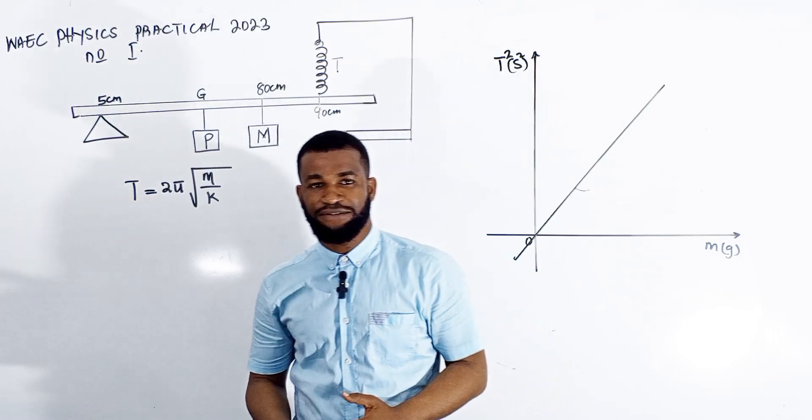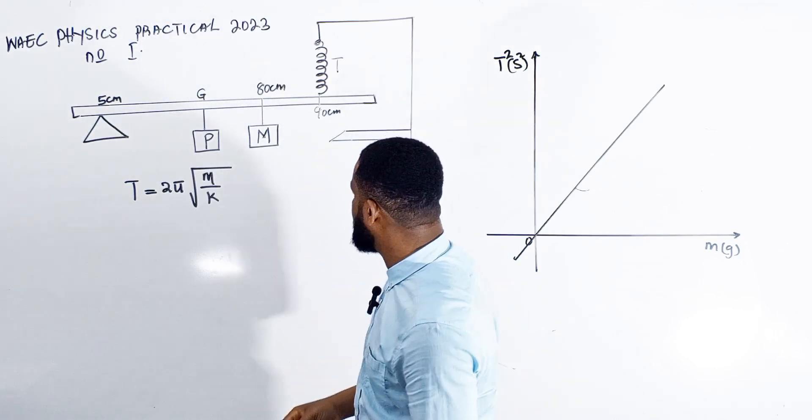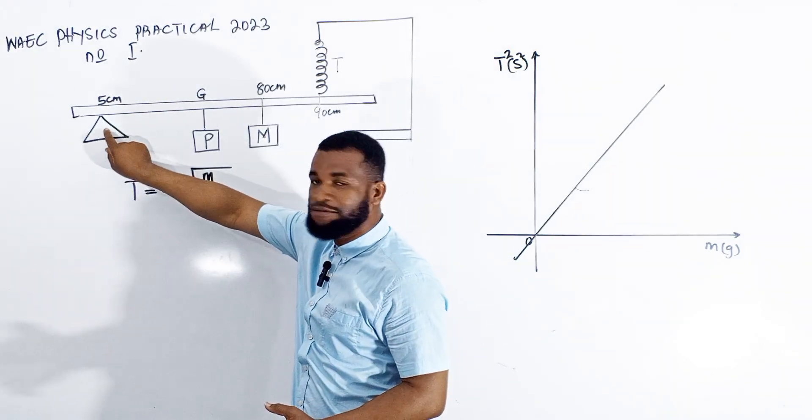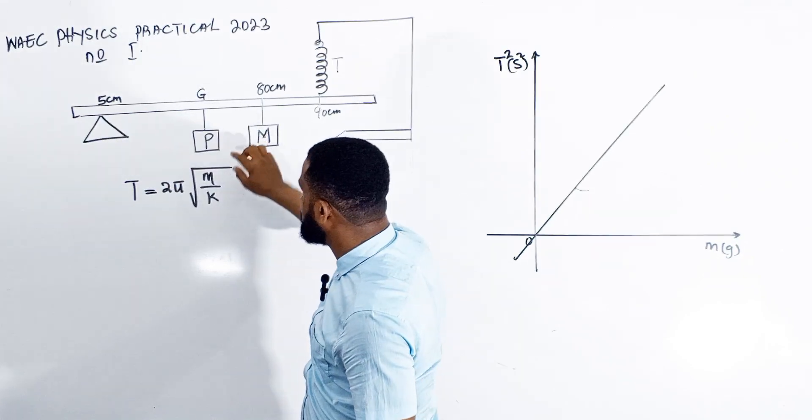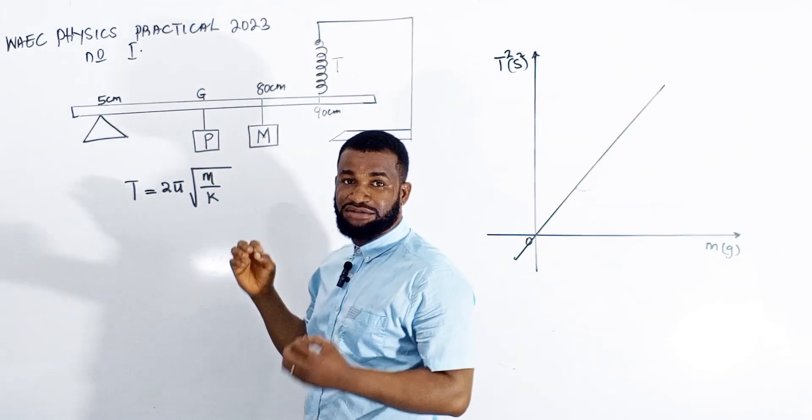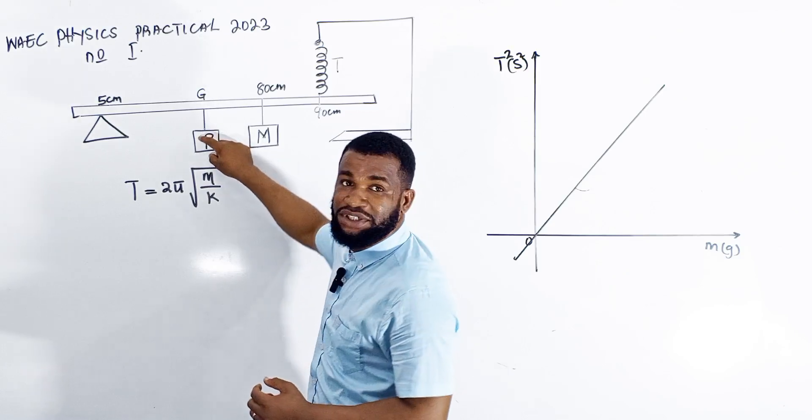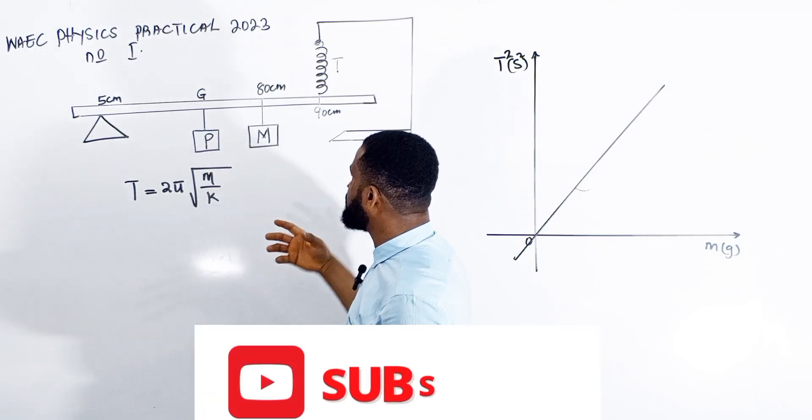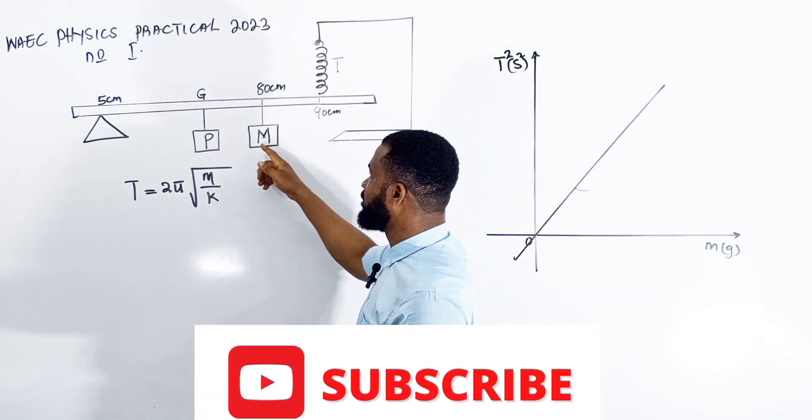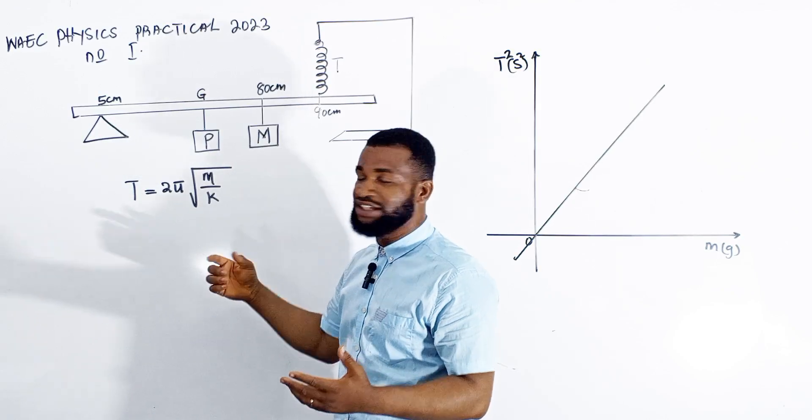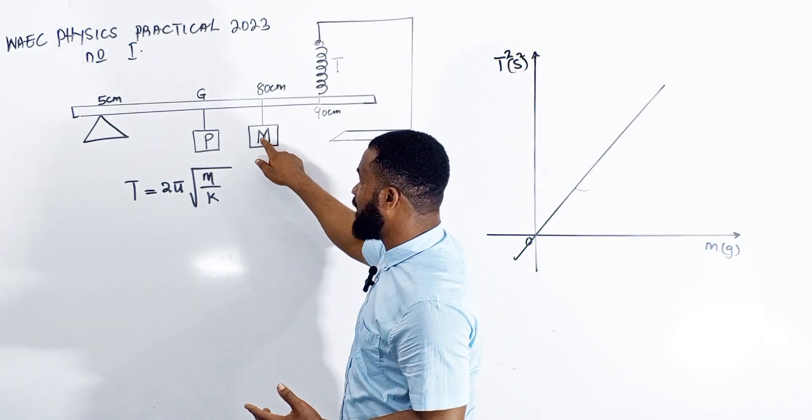Looking at question number one, they give us a knife edge, a meter rule, a mass of 100 grams labeled P, and other masses of 20, 40, 60, and 80 grams labeled M.